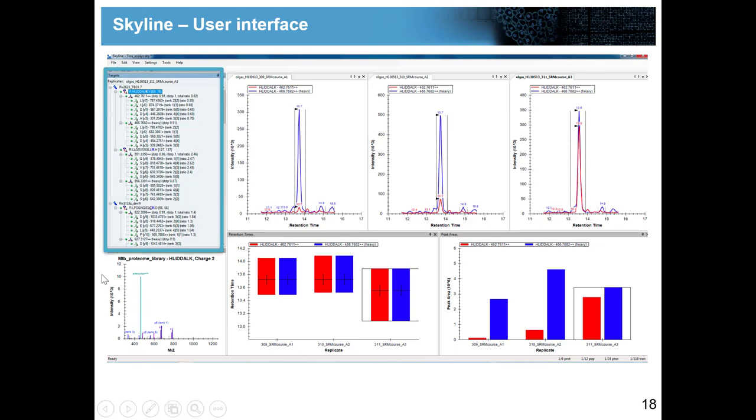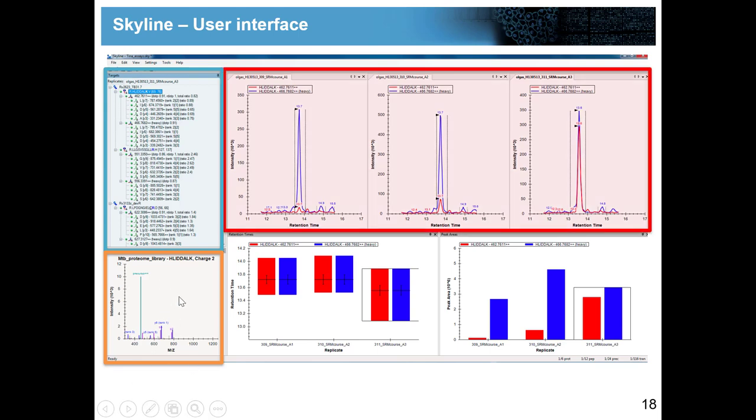In this window we have the library. I loaded a library into this document and that's where I see the library spectrum of the highlighted peptide. If I would highlight the next peptide I would see the new library spectrum for that peptide. This window, these three windows, are my raw data windows. Here I see the raw information, the extracted ion chromatograms for all those different targets.